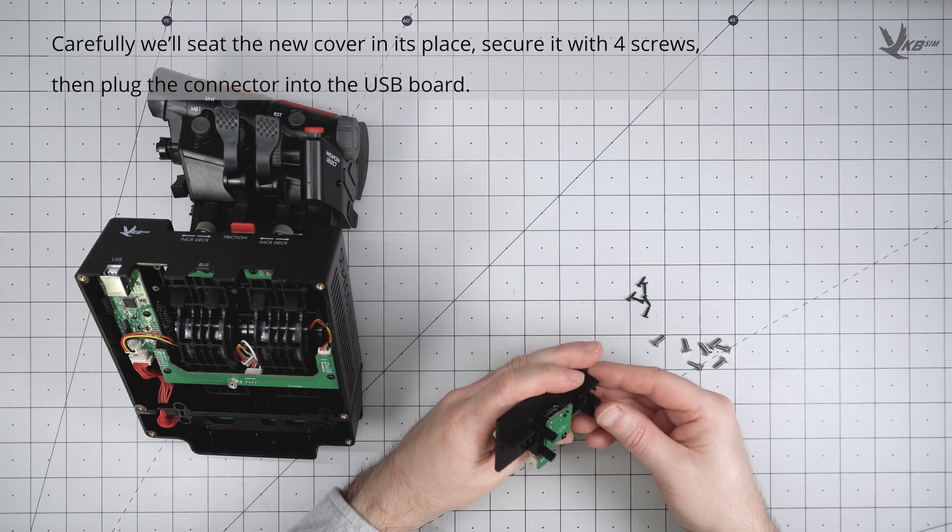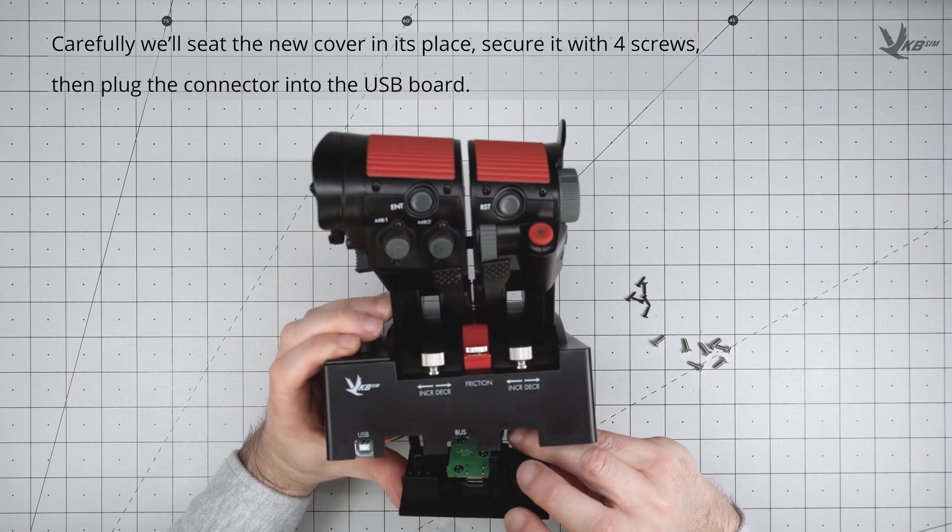Use 4 of the old cover screws to seat the new cover in its place, and then plug the connector back into the USB board.